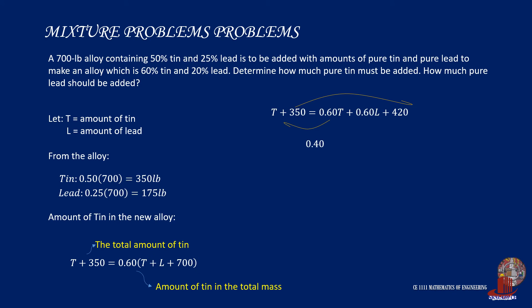Arranging terms, we come up with 0.4T equals 0.6L plus 70. Dividing both sides by 0.4, we get T equals 1.5L plus 175. Let's consider this the first equation.